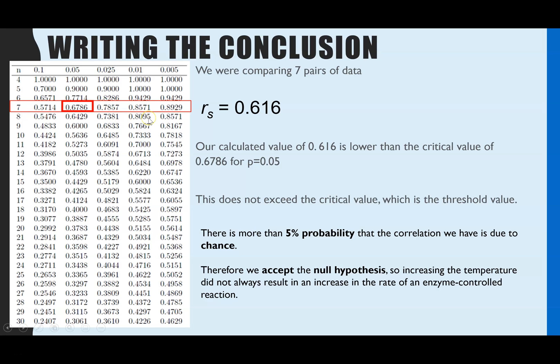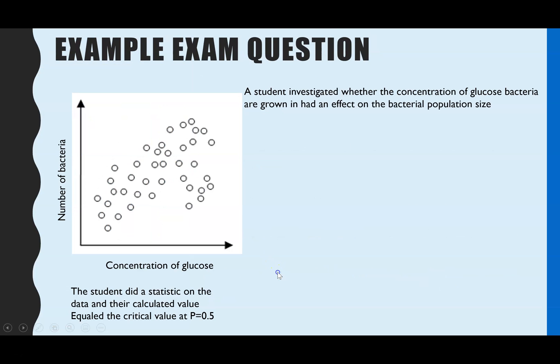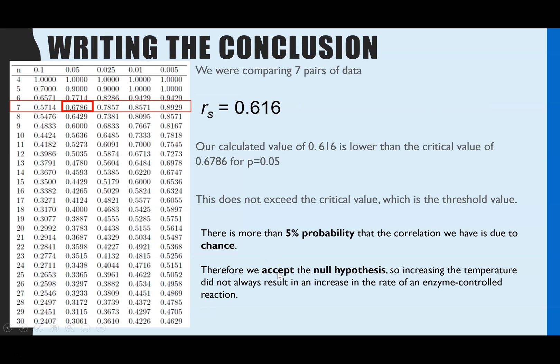So this is more likely what you'd be asked to do in the A-level exam, use the critical values table, or they might just tell you your result does exceed a p-value of, and they'll tell you the p-value, and you have to state what that means. So p equals 0.05, that is the value you have to compare to, to determine whether you can accept or reject the null hypothesis.